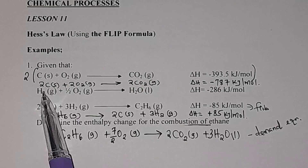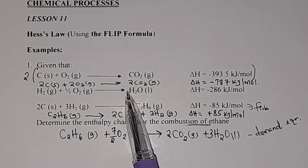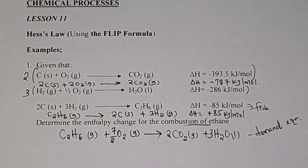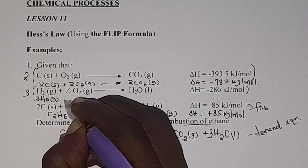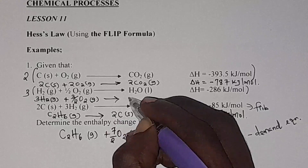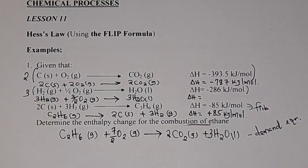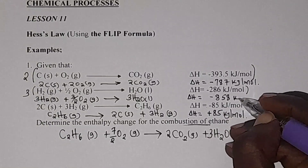The other equation is hydrogen reacting with oxygen giving us water. The water needed in the demand equation is 3 moles on the product side. In the given equation we only have 1 mole, so we take the whole equation and multiply by 3. That gives: 3H₂ gas + 3/2 O₂ gas → 3H₂O liquid. We also multiply the enthalpy change by 3, giving negative 858 kJ per mole.